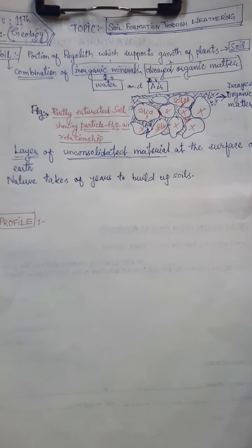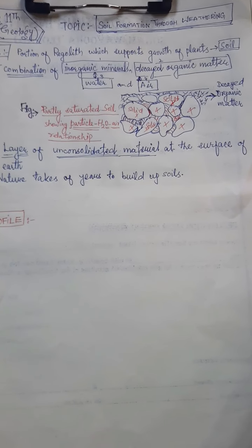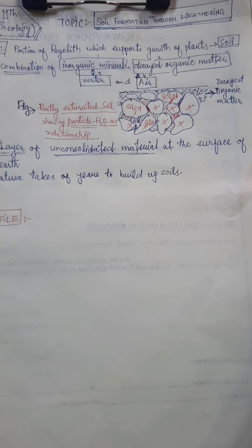Last time, we learned about regoliths. Regoliths is actually a layer of unconsolidated weathered loose material.